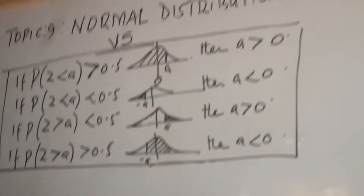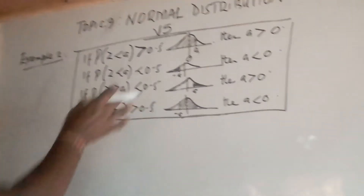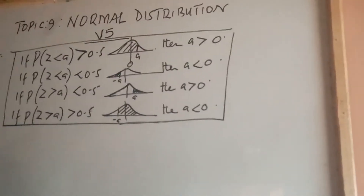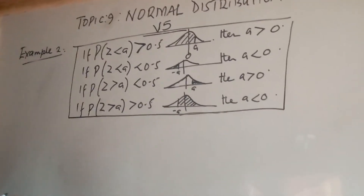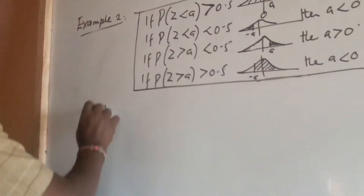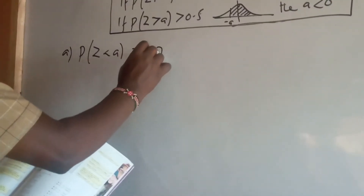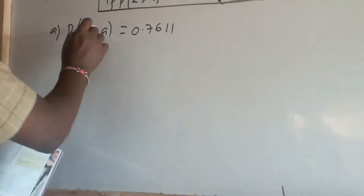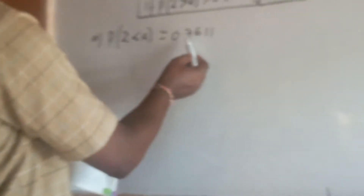In Example 2, we are told to find the values of A. We have found that we can actually find the values of A with this information in mind — very important — which we understood in the previous video. Part A is asking us: the probability of Z less than A is equal to 0.7611, and we are simply talking about Z less than A equaling 0.7611.